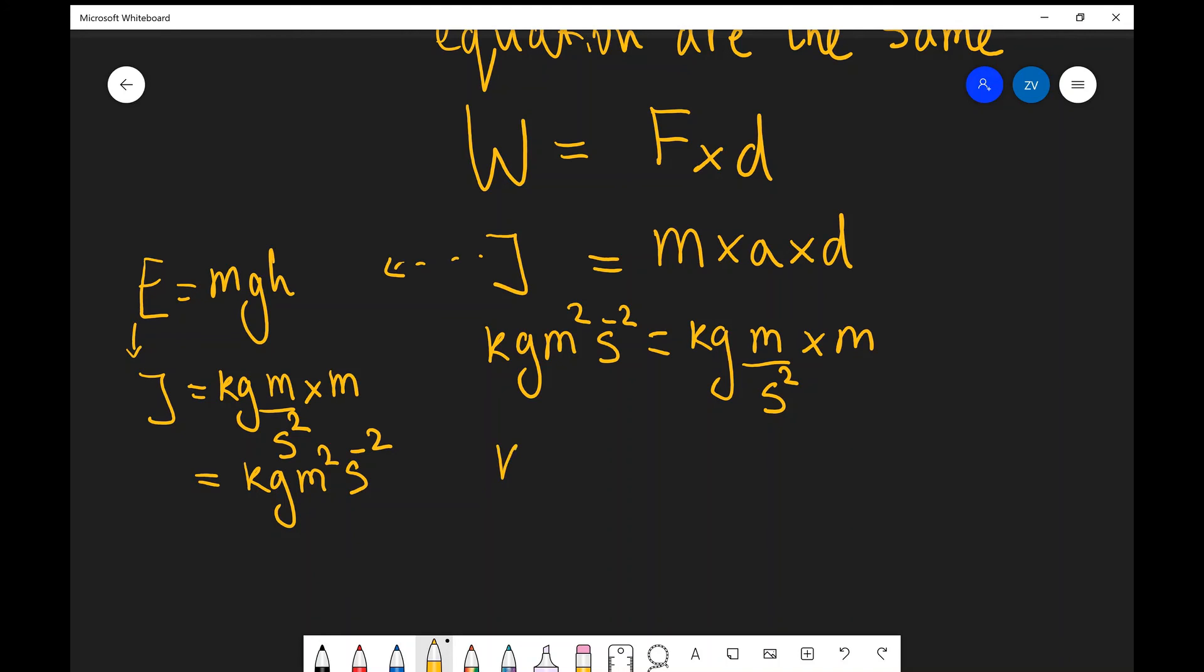So let's just do the very final step. So kilograms meter squared s to the power of minus two is equal to kilograms meters squared s to the power of minus two. So this equation is homogeneous. The SI base units on the left are equal to the SI base units on the right.